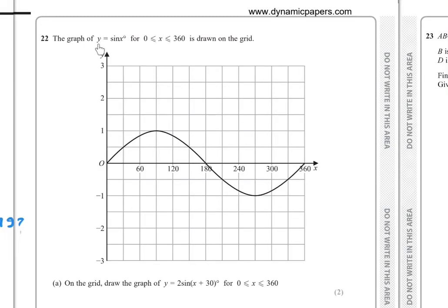Question 22. The graph of y equals sin x is drawn on the grid. Part a: On the grid, draw the graph of y equals 2 sin of x plus 30 from 0 to 360.